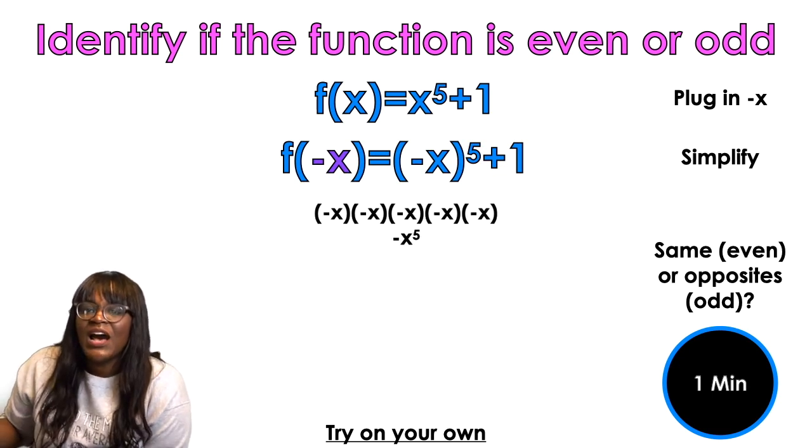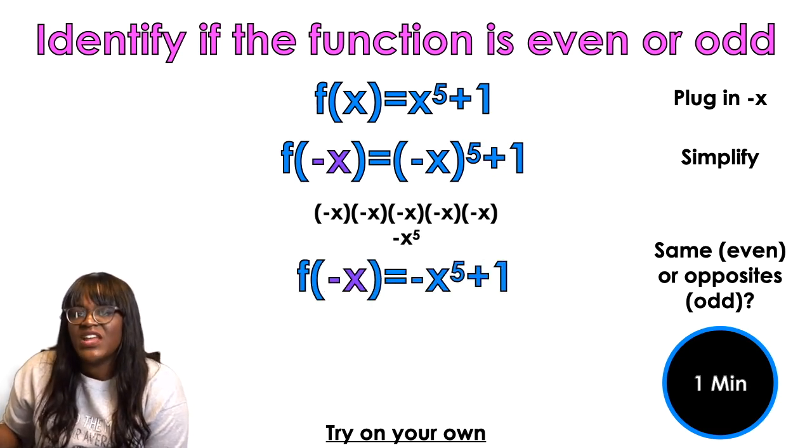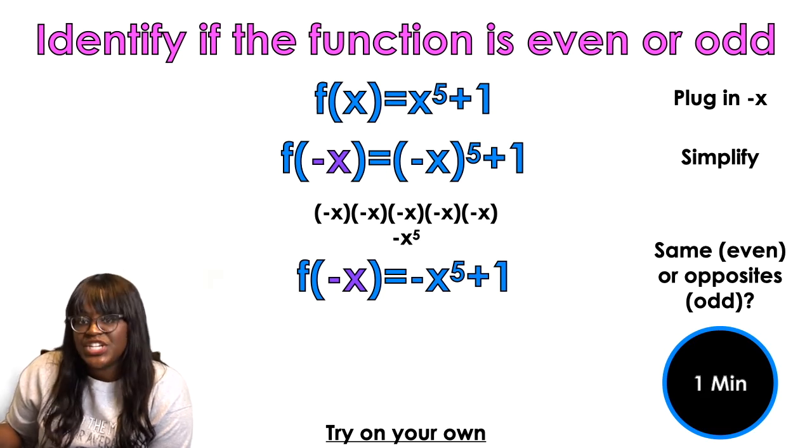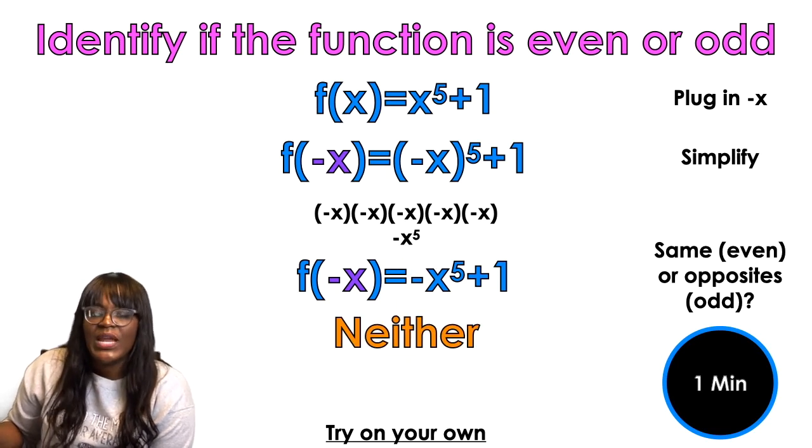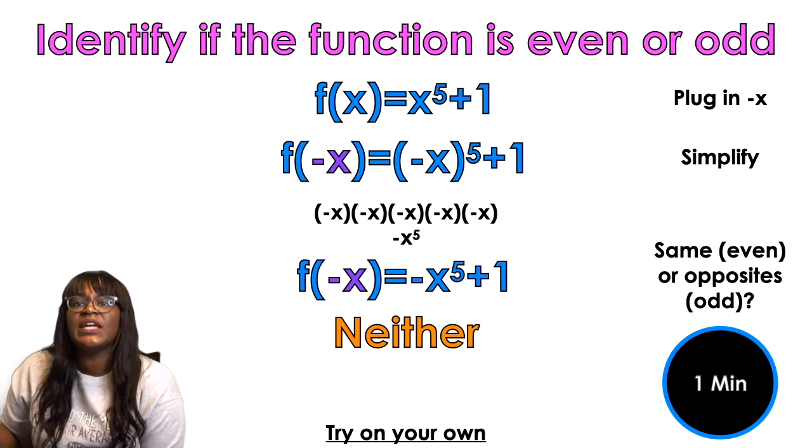So when I plugged it in, I have an odd five negative x's. So that's like five negatives. So that's going to come out negative. The one is going to stay positive. And guess what? Only one sign changed. I either have all the signs change or nothing changes. If one of them changes and one of them doesn't, that's a neither. It's not even. And it's not odd.